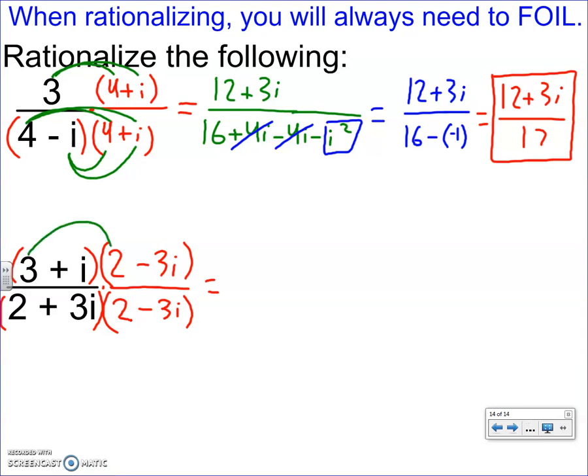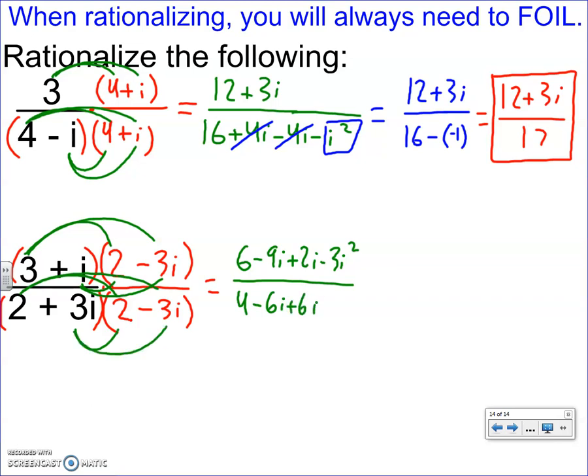So let's do the top. 3 times 2 is 6. 3 times negative 3I is negative 9I. Inside's I times 2 is positive 2I. Last's I times negative 3I is negative 3I squared. All over, now for the bottom. 2 times 2 is 4. 2 times negative 3I is negative 6I. 3I times 2 is positive 6I. And 3I times negative 3I is negative 9I squared.